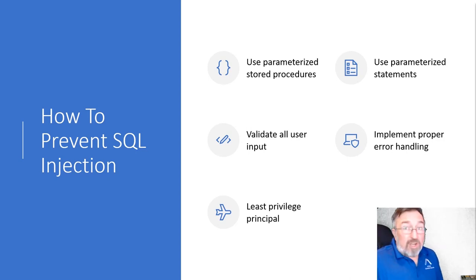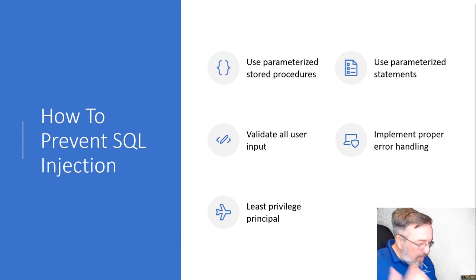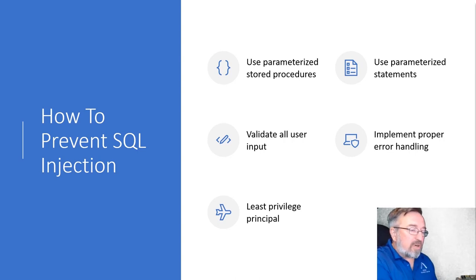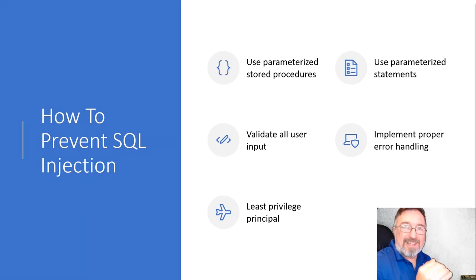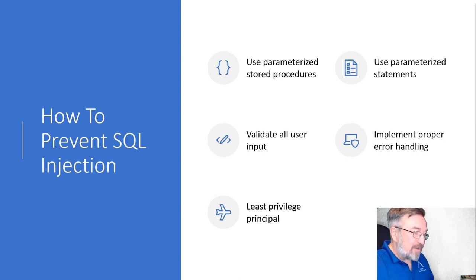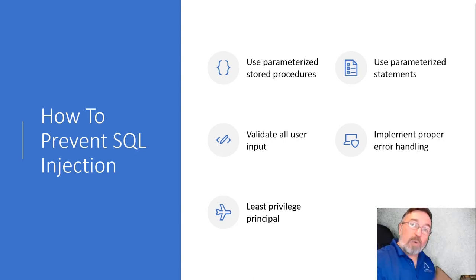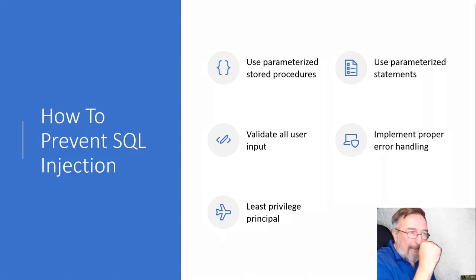Write the code the way we're supposed to write code. I can't believe in 2020 we're not ensuring that our data types are correct in the application. I used to be a developer — I wrote code back in the 90s — and we put the appropriate data types into the code to ensure that when it went into the database, it was the right data type. We didn't put strings where it was supposed to be dates or numbers. Everything had an appropriate data type. Why would we not do that now?